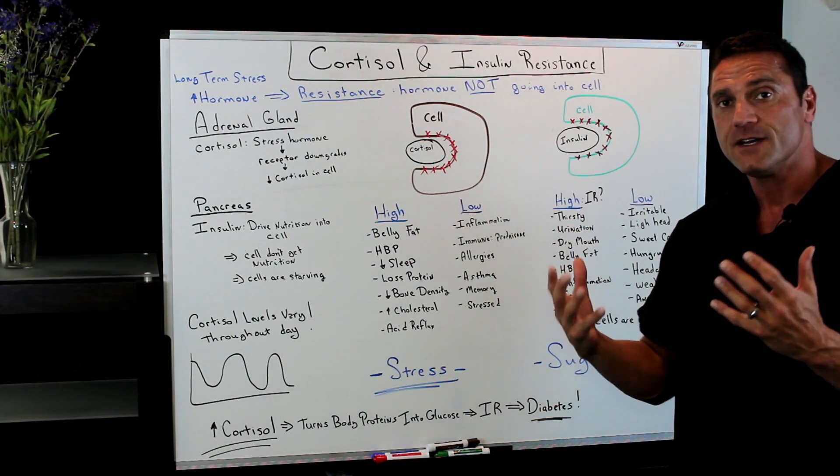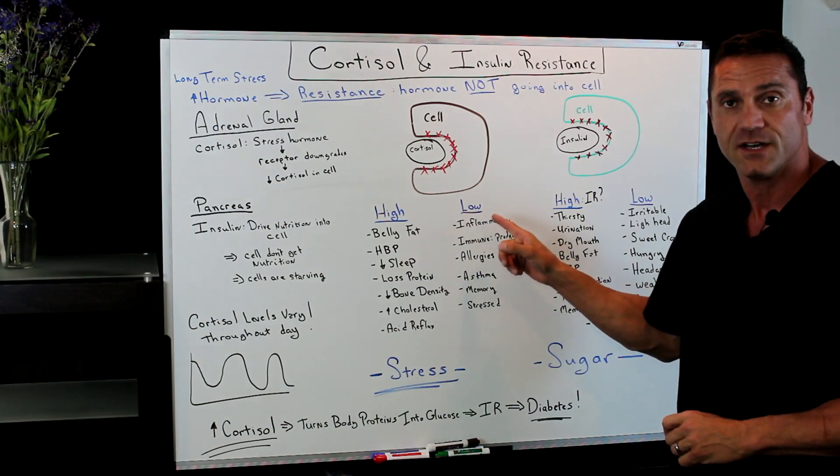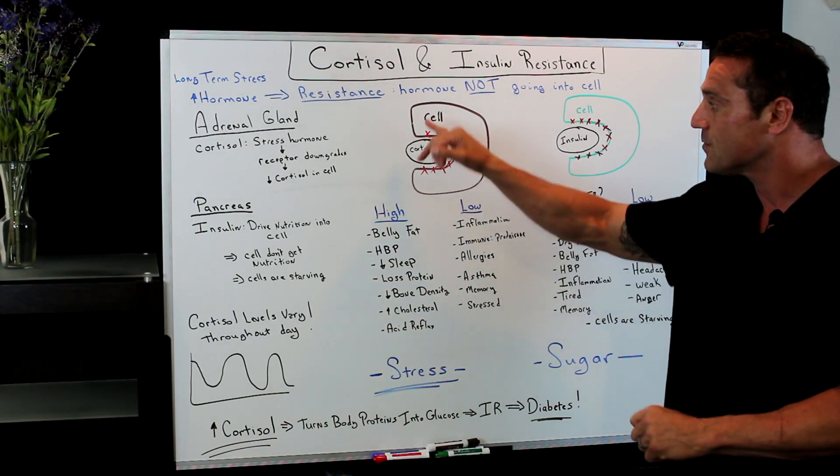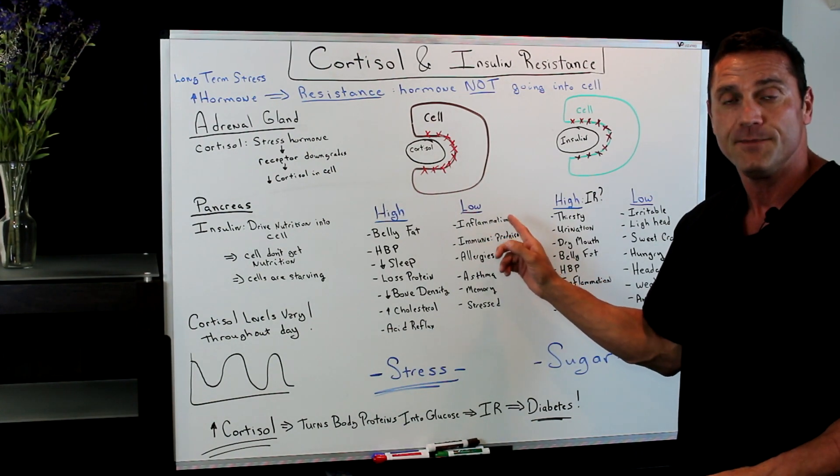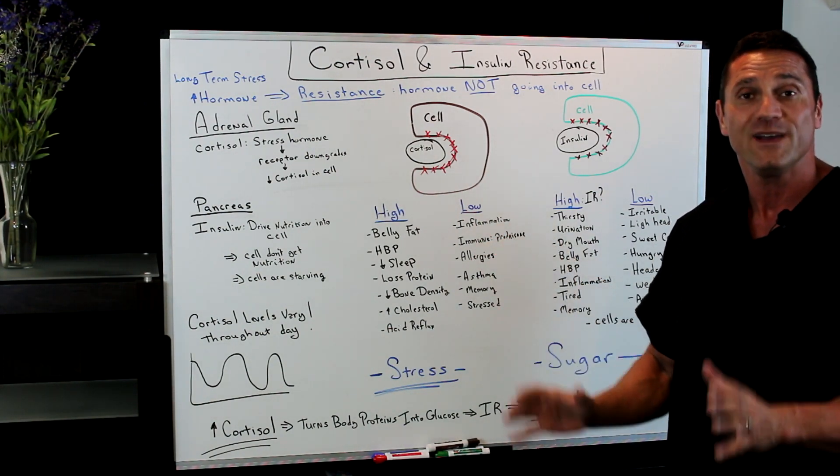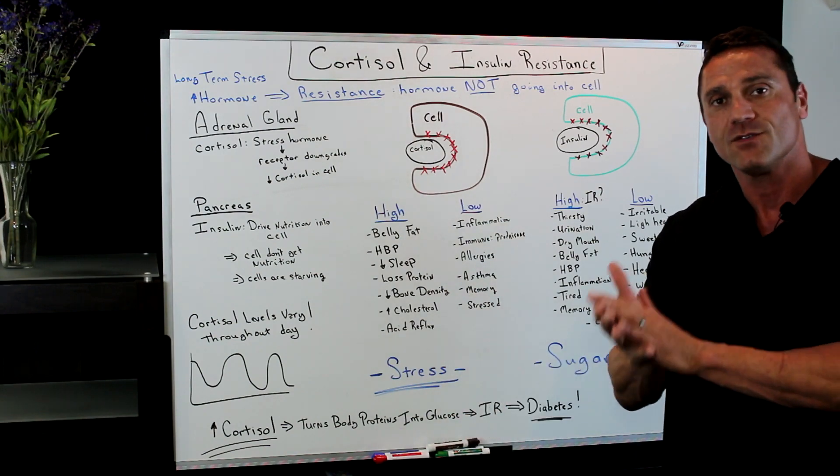You could have the same symptoms. They fluctuate. Too much cortisol, not enough cortisol is getting to the cell because it's resistant. This is where we get chronic inflammation. People who are stressed out are always inflamed because what does cortisol do?